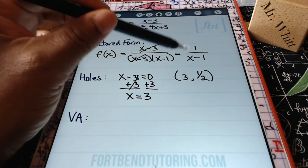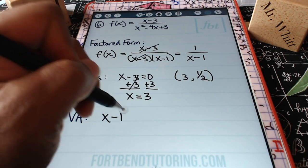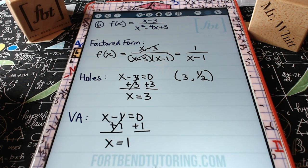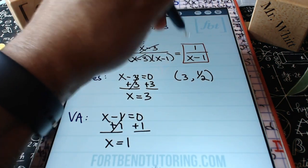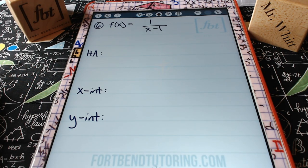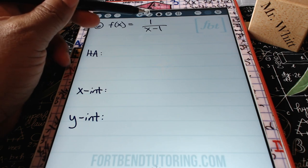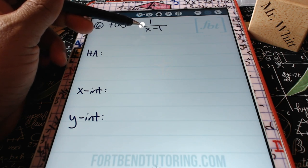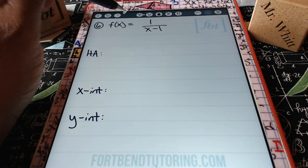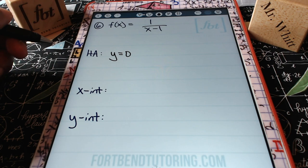The vertical asymptote comes from the remaining factor: x-1=0 gives x=1. For the horizontal asymptote: the numerator has degree 0 and denominator has degree 1, so since the denominator's degree is greater, horizontal asymptote is y=0. There's no x-intercept because 1=0 is a contradictory statement.